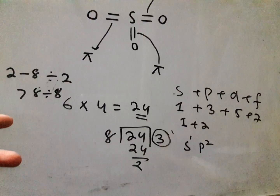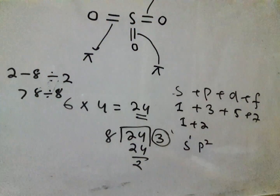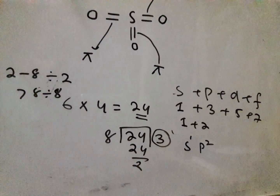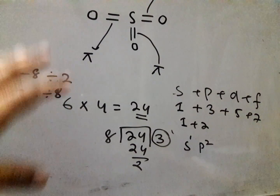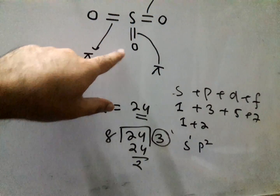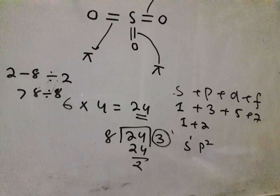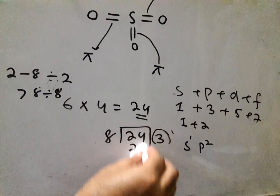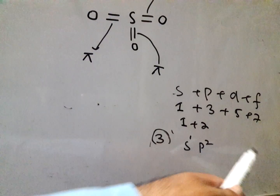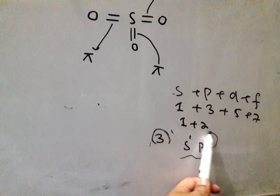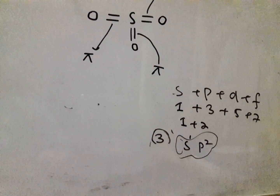There are other ways as well, but these two are the easiest. If you know the structure, count the pi bonds. If you don't know the structure, calculate all the valence electrons and divide by eight — twenty-four divided by eight gives three, meaning three orbitals: one S and two P, which is SP2.